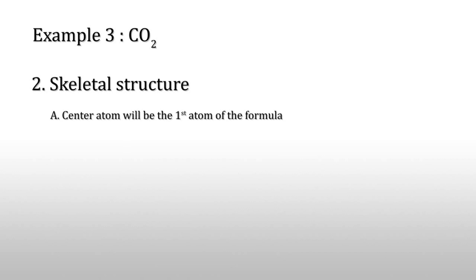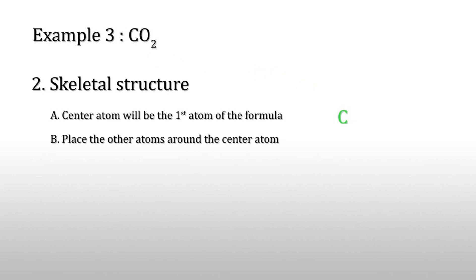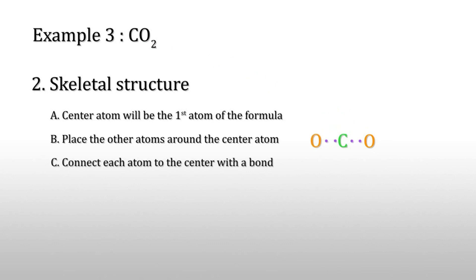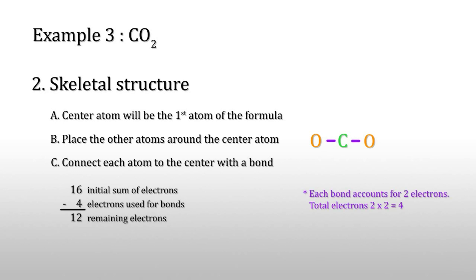First, write the center atom — that is carbon — and place the other atoms, the two oxygens, around it. Then connect each atom to the center with a covalent bond. Each bond accounts for two electrons, so four electrons are used. The remaining electrons are twelve.